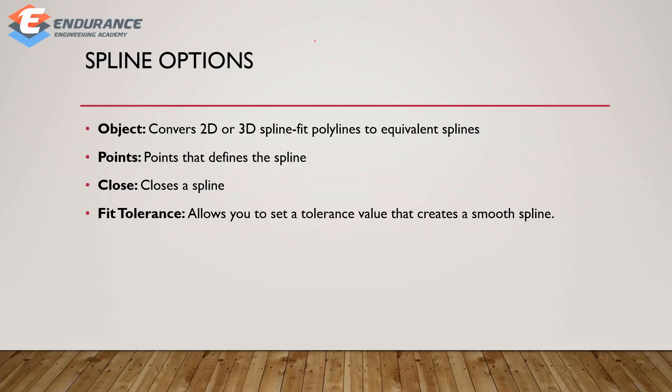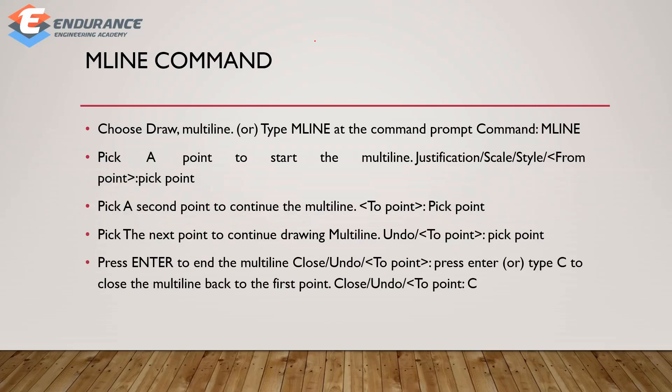The next one is the Spline object. If you have a 2D or 3D spline, you can convert it. If you have a point in the spline, you can close the point. If you have a fit tolerance value, you can switch to the spot. Next one is the Mline command — this is the Multi-Line command. If you type Mline, you can select the number of lines, the scale, and the point.